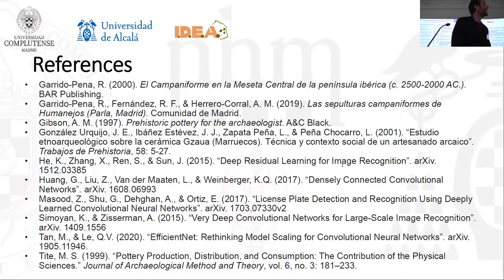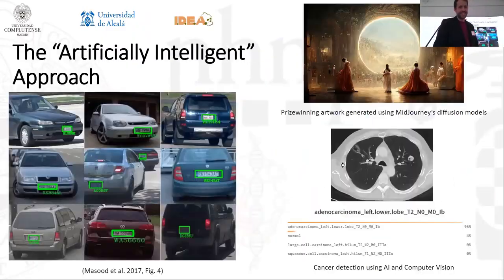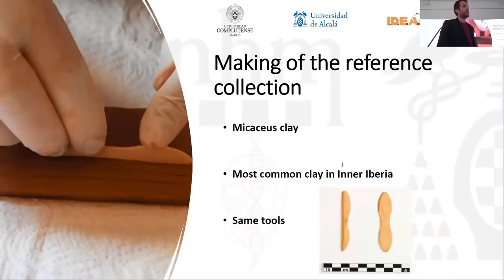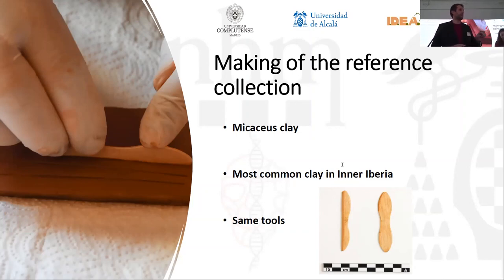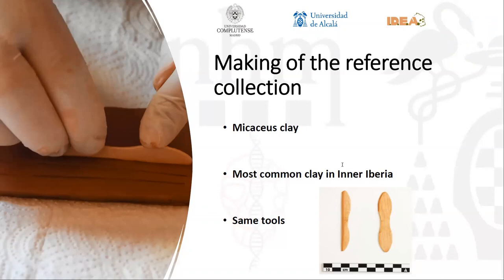Question from audience: Did I understand correctly that the two artisans used exactly the same tool? Yes, the two artisans used these two tools. With this approach, we eliminate the possibility that the algorithm is seeing differences between the tools. One tool on the left was used for the impression sample, while the one on the right was used for incision. We used both tools to try to reduce variability and test the potential of the algorithm to make this kind of classification and differentiation.